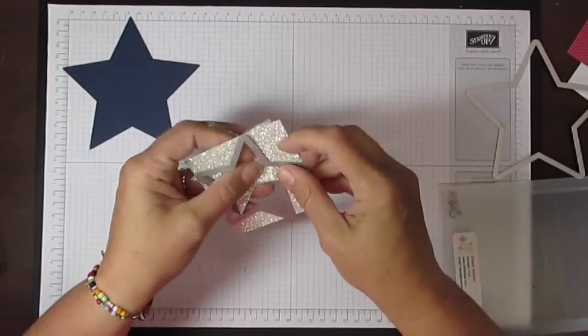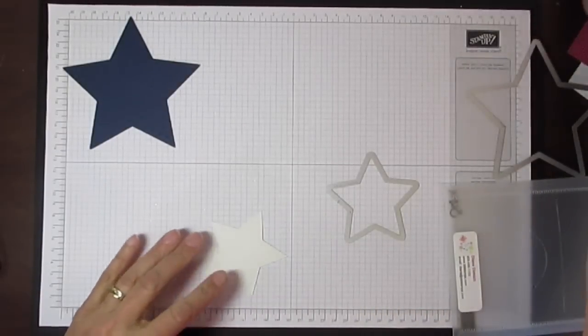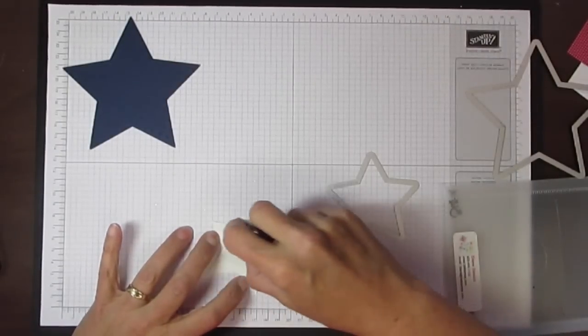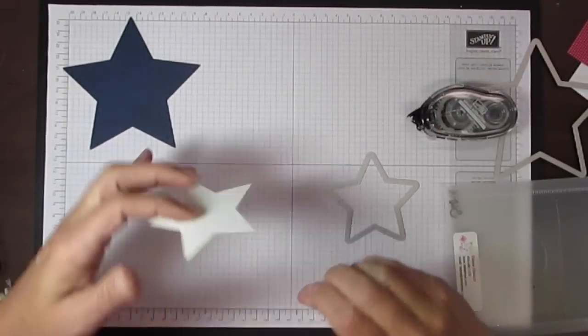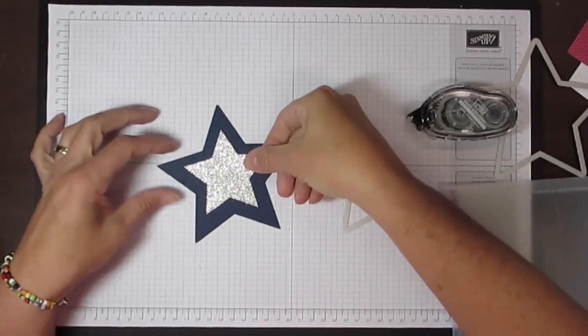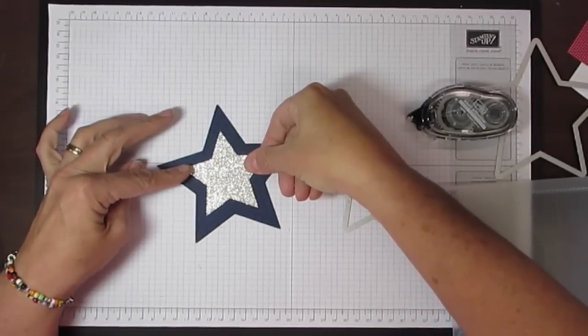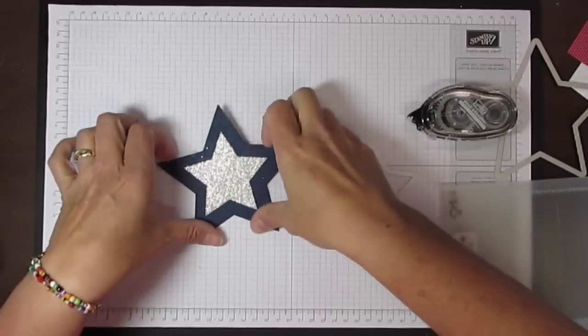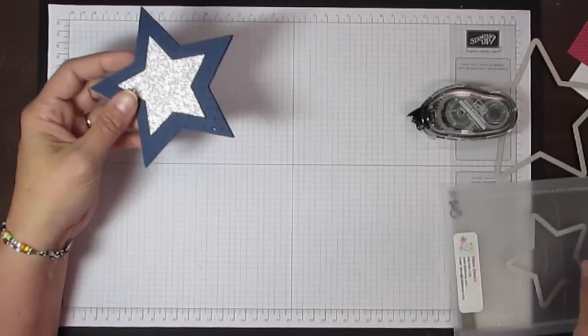Once you've got that cut out, this is going to be attached to the front of the card base. You can start to see this card coming together—that's cute just like that.